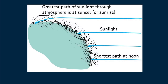What about sunrises and sunsets? Why are they tinged with reds and oranges? Because the low frequency colors red and orange are the least scattered by the atmosphere. These colors are better transmitted through the air.